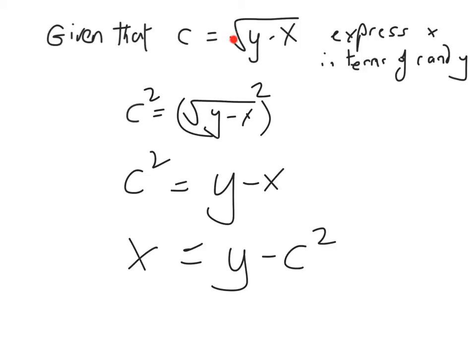So the key to doing this is get rid of the square root sign straight away and then try and get x on its own.